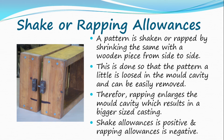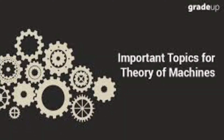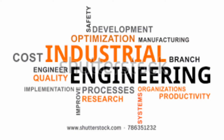Shake or rapping allowance: A pattern is shaken or rapped by striking it with a wooden piece from side to side. This is done so that the pattern is loosened in the mold cavity and can be easily removed. Rapping enlarges the mold cavity, which results in a bigger-sized casting. Shake allowance is positive and rapping allowance is negative.